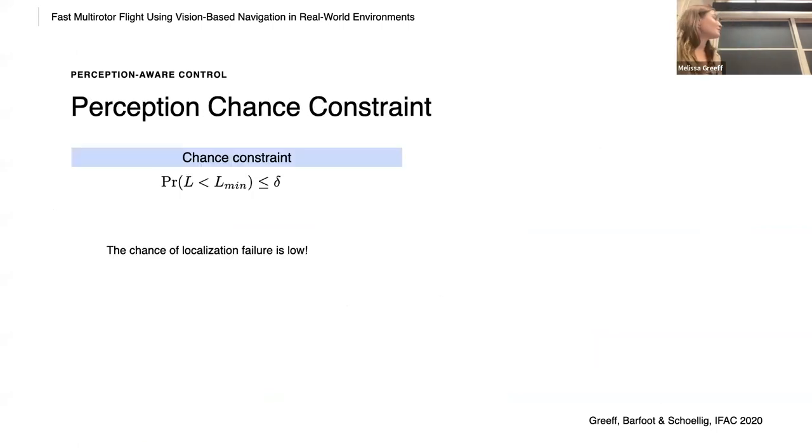So we want the chance of localization failure to be low. And so we can encode this as a chance constraint. Where the probability of the number of localization inliers being below some threshold is very small.